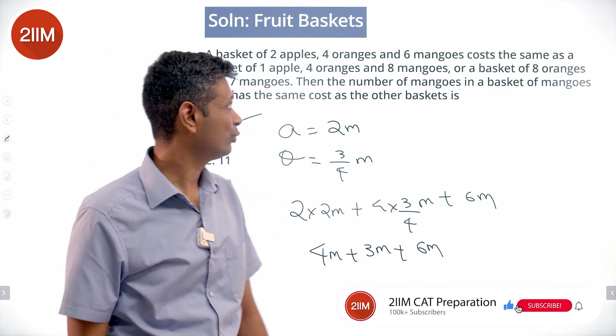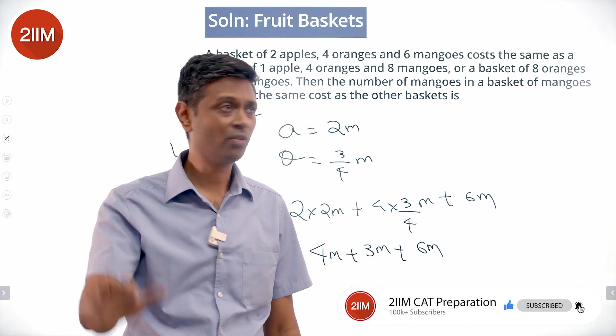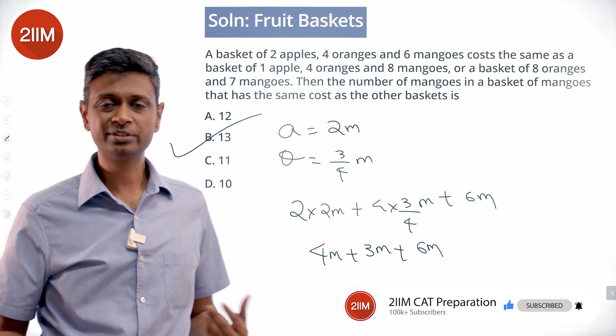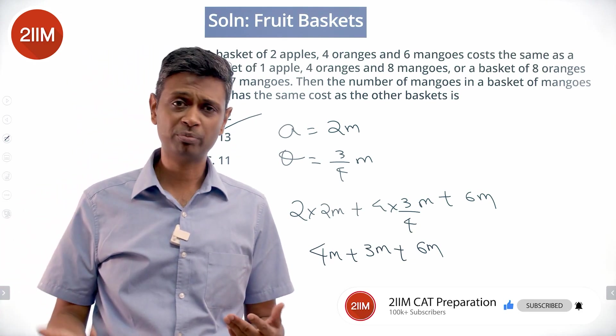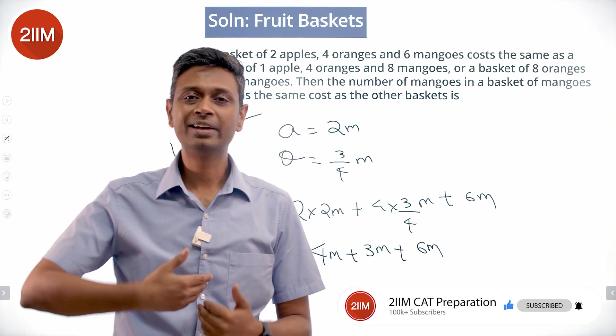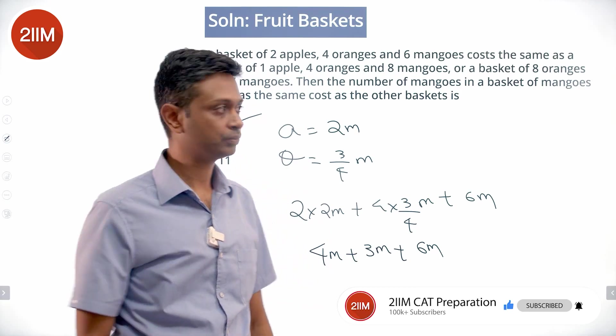To summarize: there are four oranges in two of the equations — cancel them out and oranges disappear. That gives an equation in apples and mangoes. Get apples in terms of mangoes, plug that into the next equation, convert everything to mangoes, and we're done.